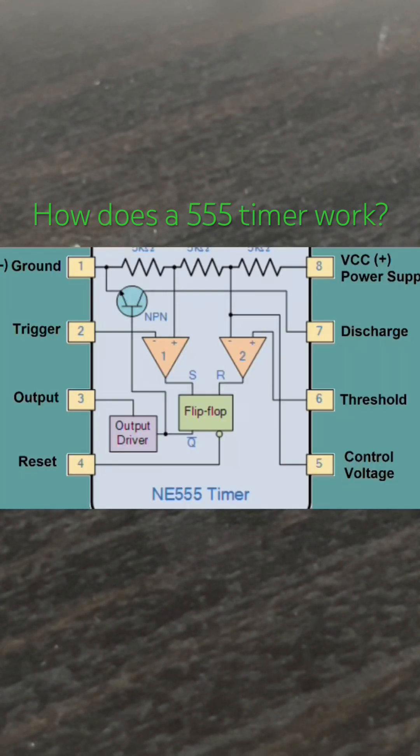Let's look at a schematic of it. So the first pin is ground, the fifth and eighth pins are both voltage. Then we have the trigger and threshold pins.